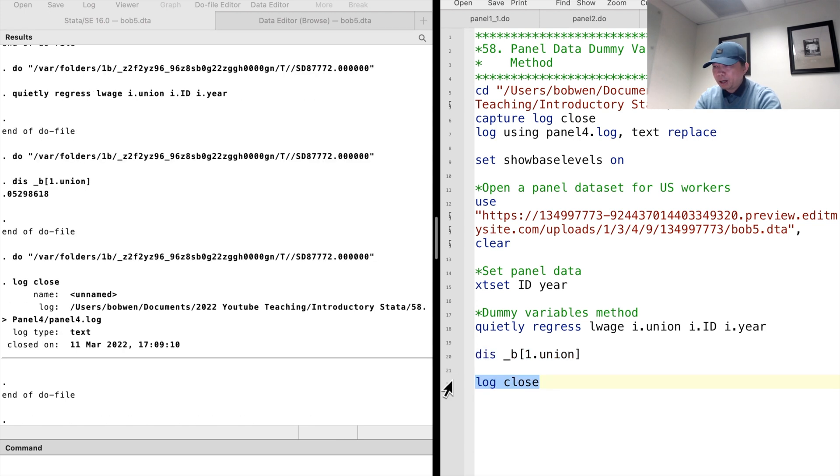We usually apply the dummy-variables method only to the time-fixed effects, with just a few time-dummies to be estimated, and use the time-demeaning method we will discuss in the next video to account for the individual fixed effects.